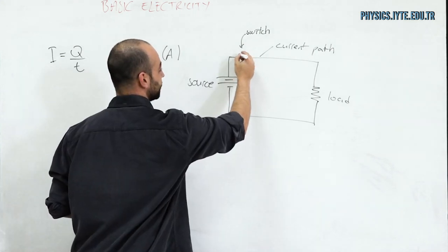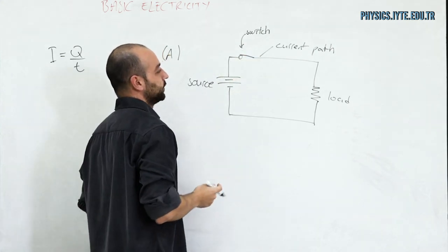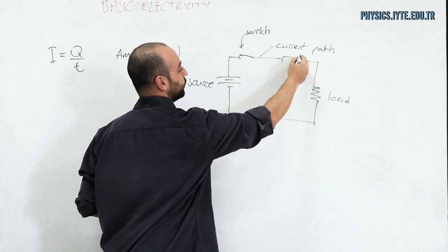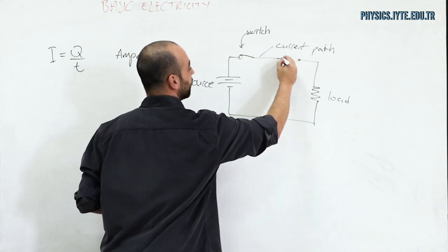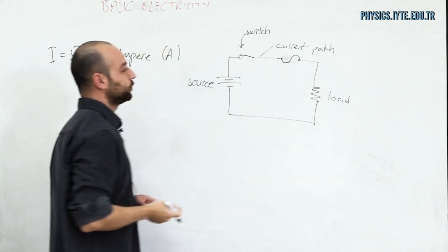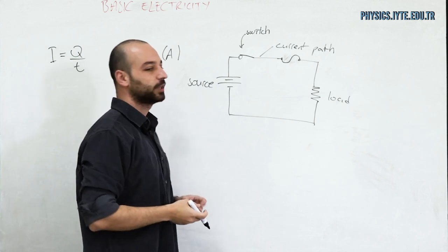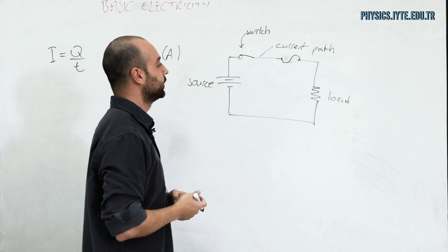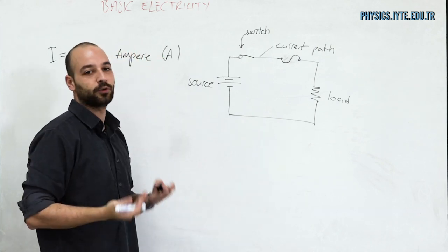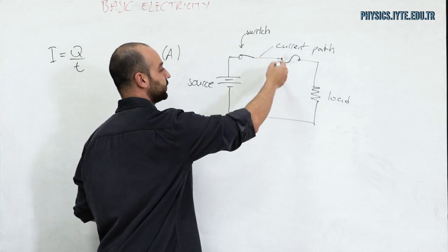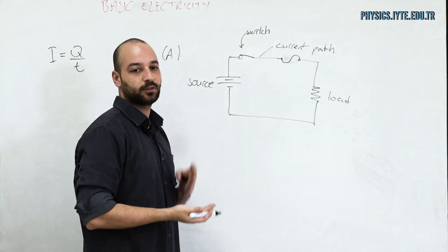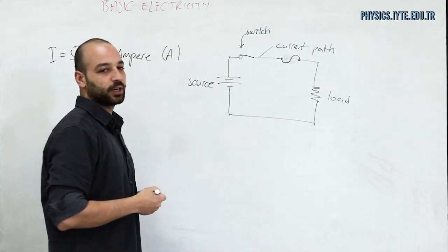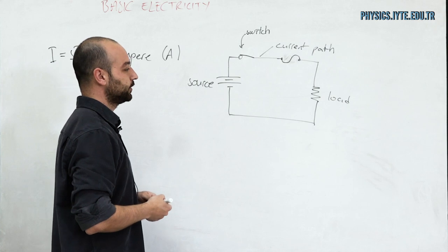We also have protective devices — most commonly the fuse, which can be shown in two different symbols. We use fuses in order to protect the circuit and the person using it from overcurrent. When overcurrent flows through the fuse, the fuse blows and cuts the current, thereby providing protection.